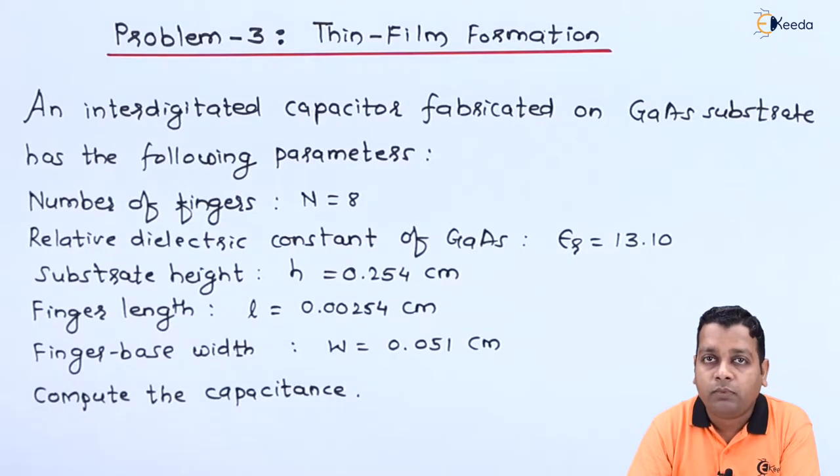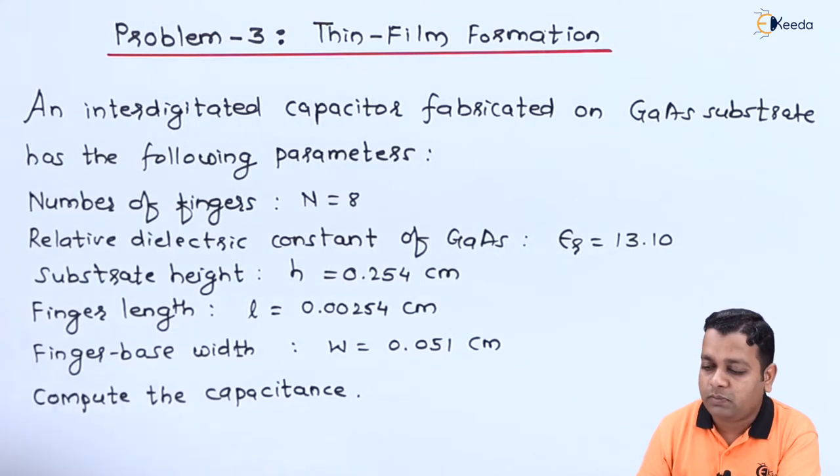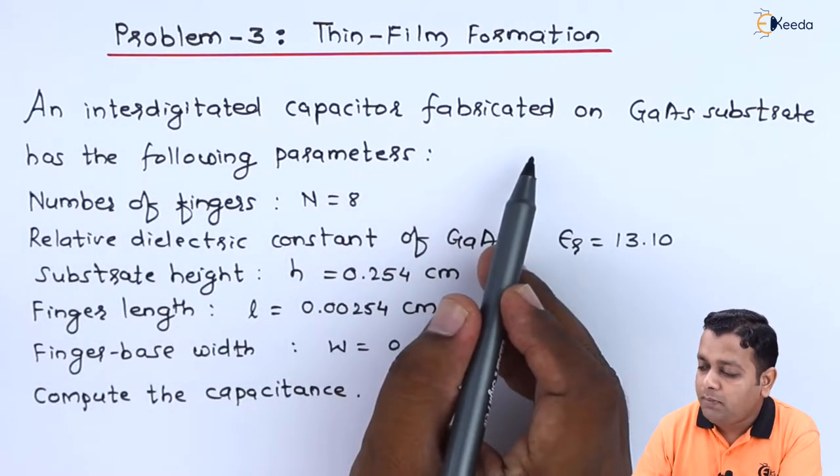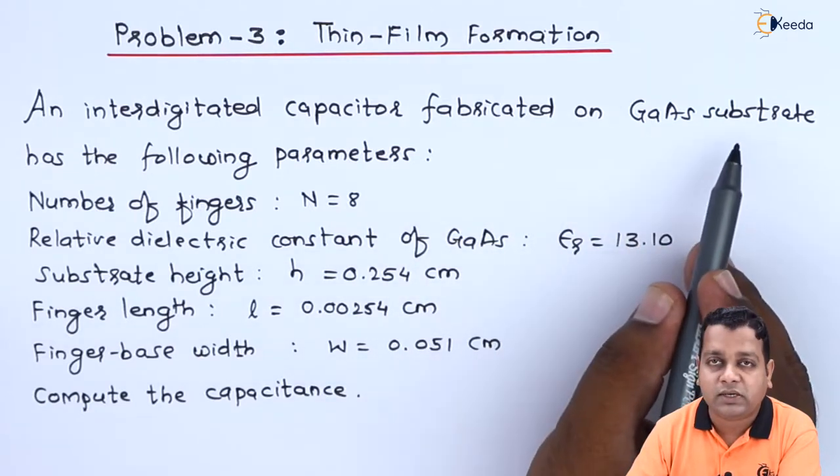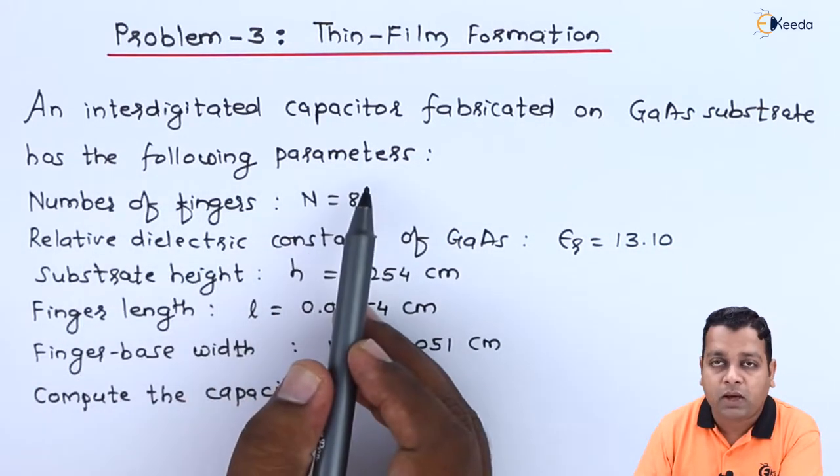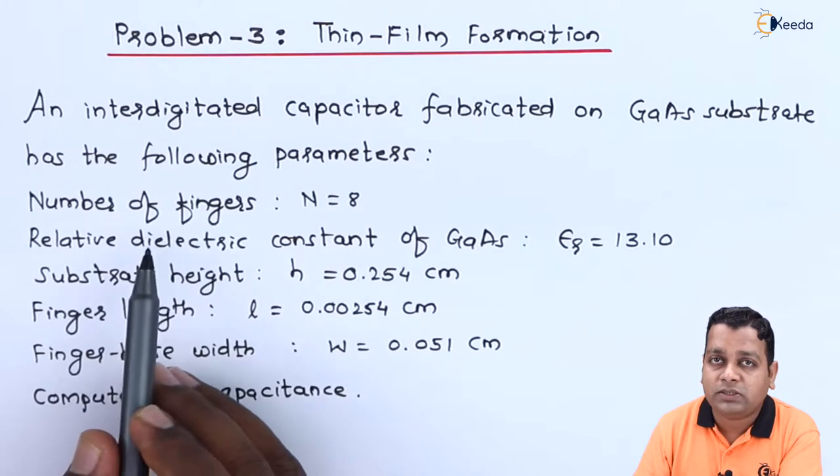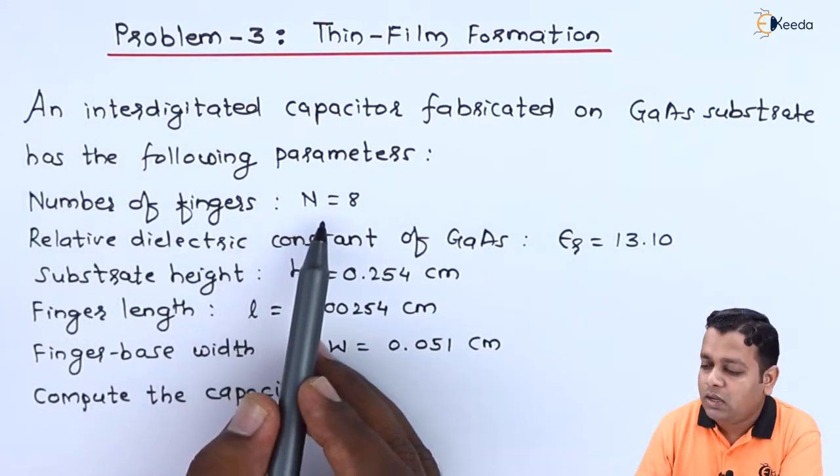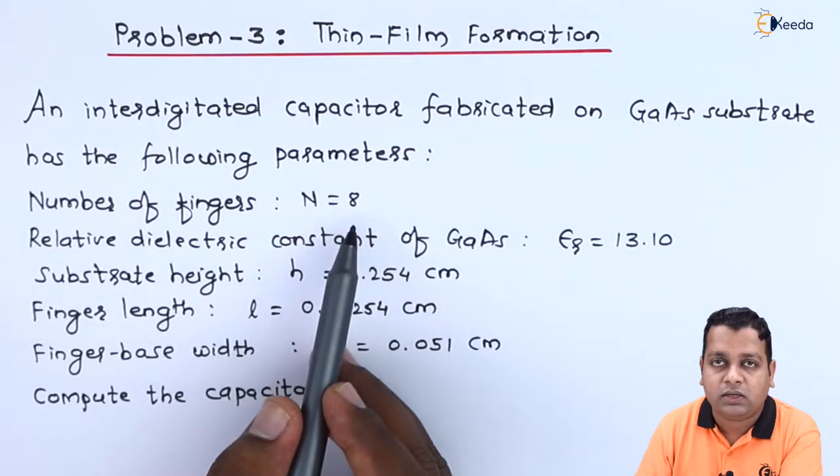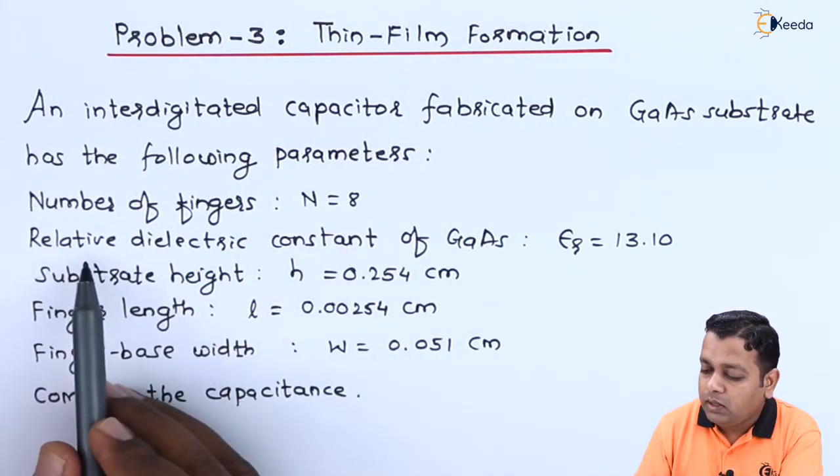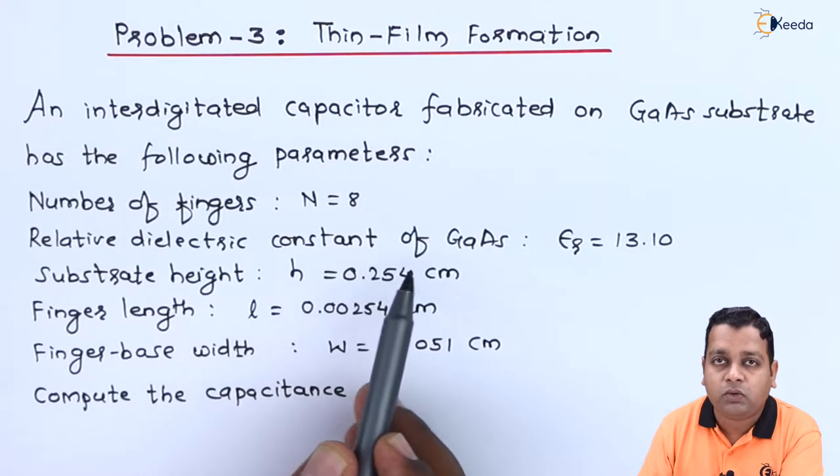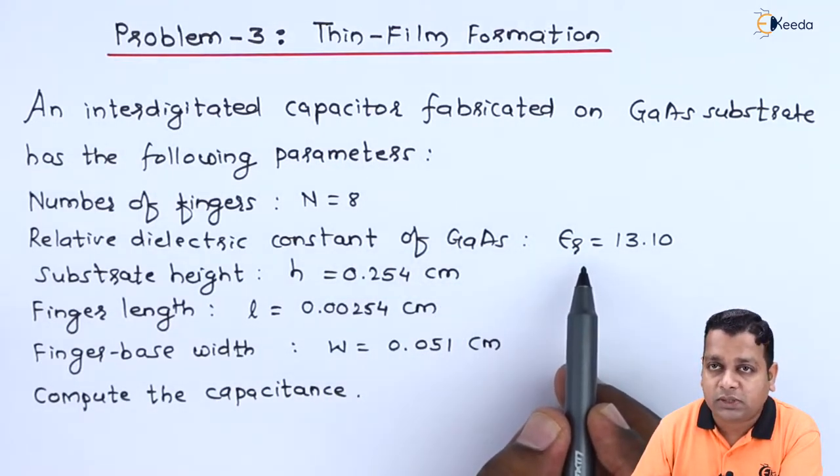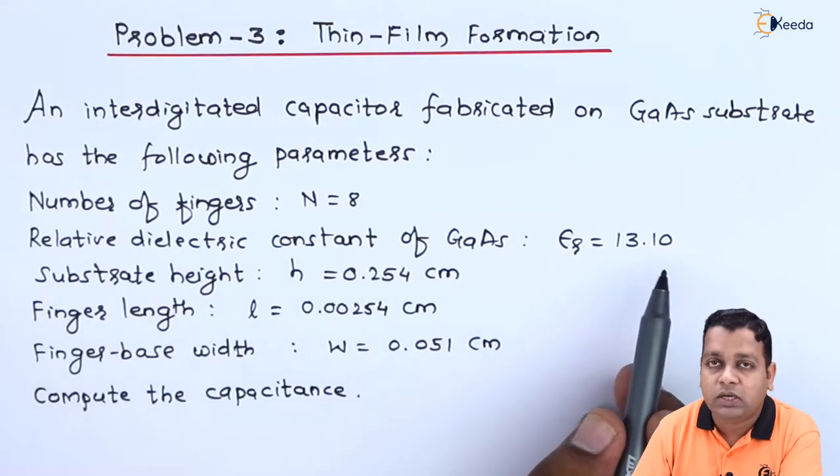So here we have a problem statement. The problem statement begins with an interdigitated capacitor fabricated on gallium arsenide substrate has the following parameters. The parameters are listed as number of fingers, capital N denoted and it holds the value 8 as the given data. The relative dielectric constant of gallium arsenide, it is denoted as epsilon suffix R, the value is 13.10.